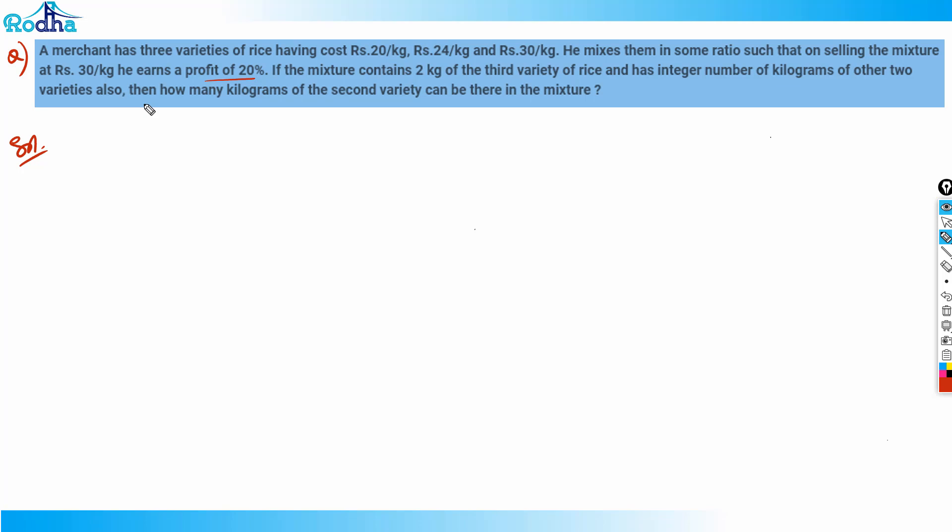Let's assume one kg for each since the prices are already per kg. The selling price of the mixture is given as rupees 30 per kg, and the merchant makes a profit of 20 percent.